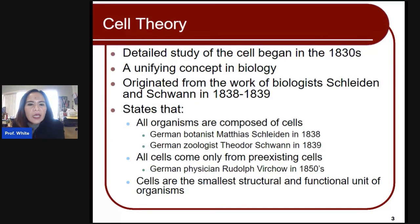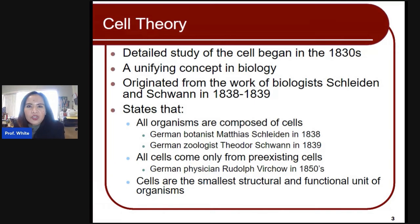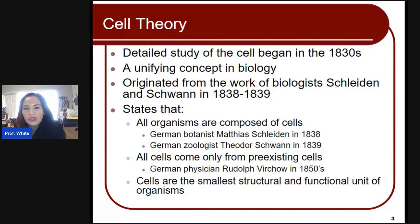We'll start first with the cell theory. Cell theory is a detailed study that began in the 1800s, and this is actually the unifying concept of biology. It originated from the work of biologists Schleiden and Schwan in 1838, 1839. The cell theory basically states that all organisms are composed of cells, as proven from the studies of Matthias Schleiden and Theodore Schwan of what they found out about plants and animal cells.